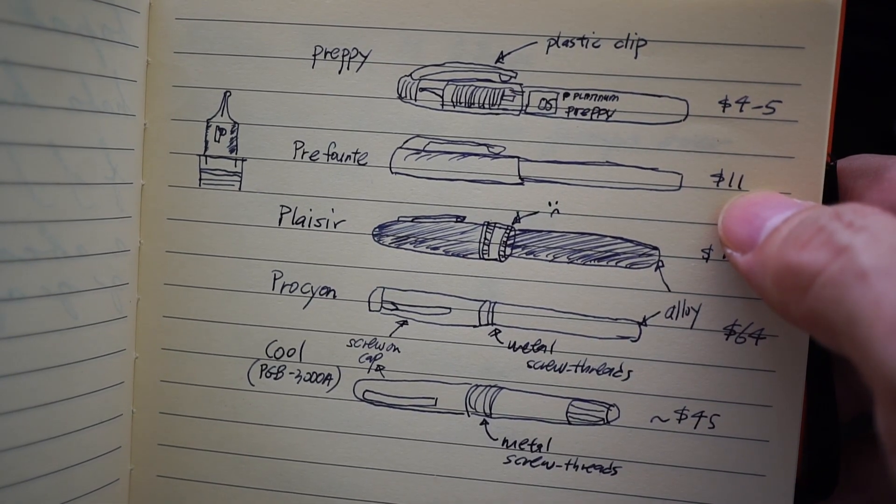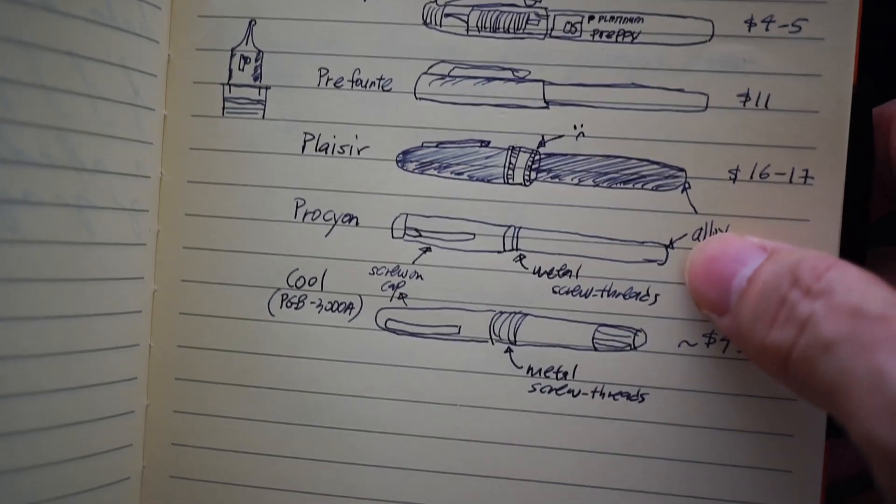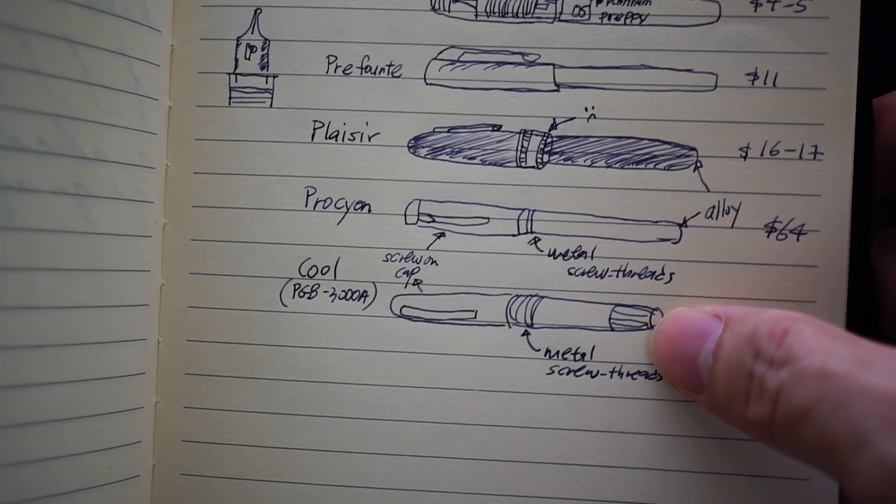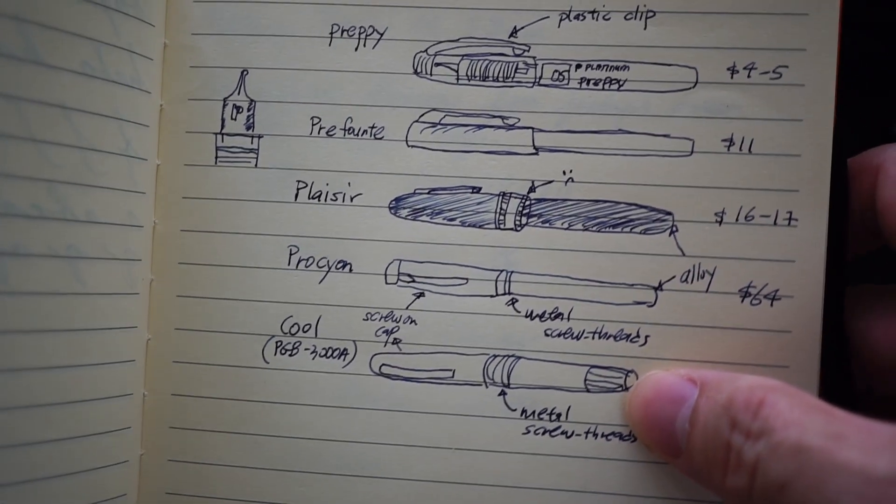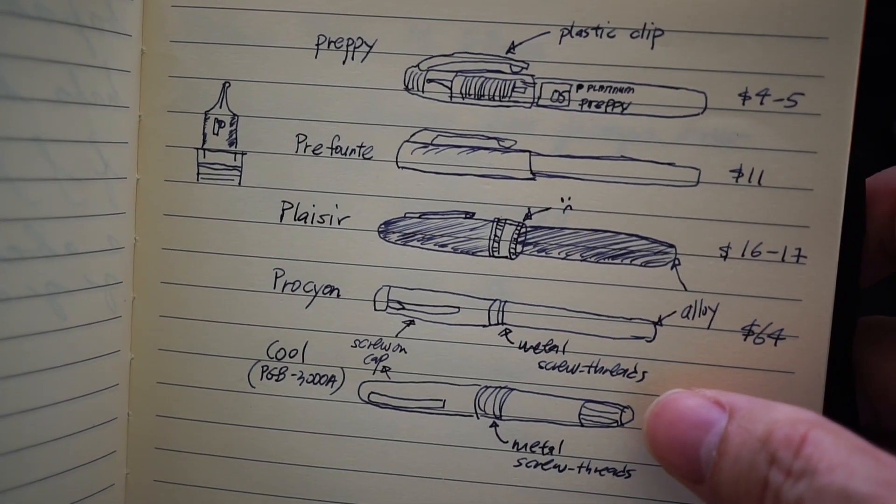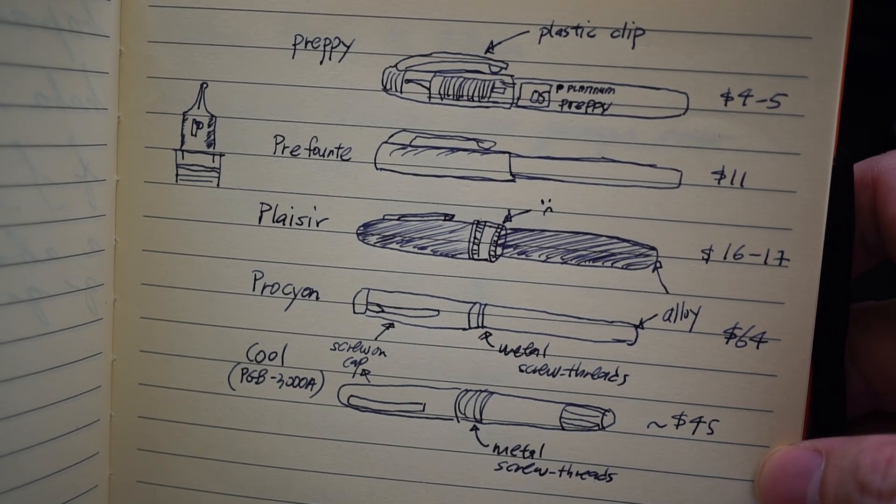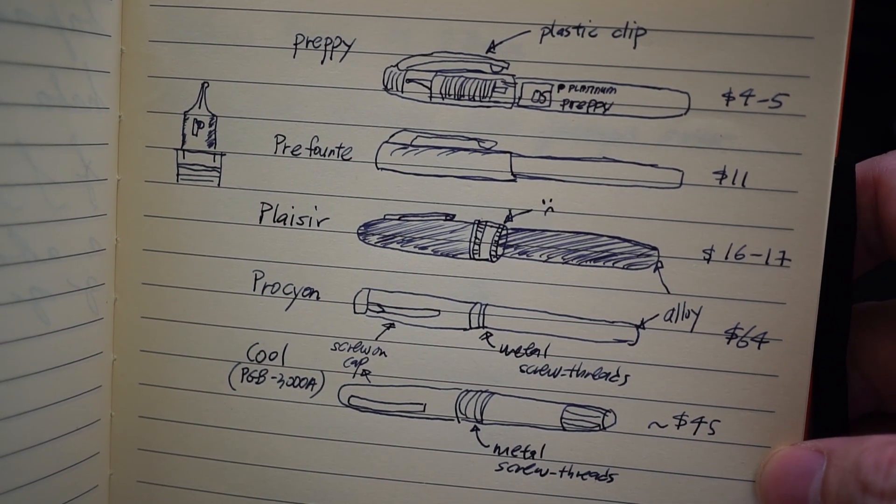It's used in the Prefonte, it's used in the Placer which is what I showed you just now, the Procyon as well as the Cool. Not sure what I left out, other models of Platinum pens could have left out some, but I think these are the main and the mainstream pens that are using the Preppy nib.